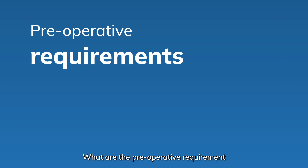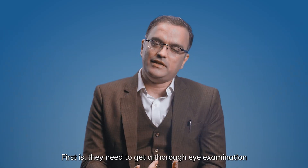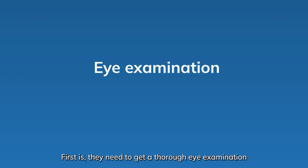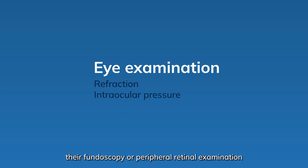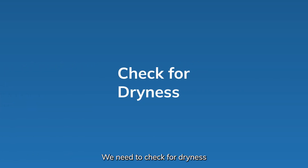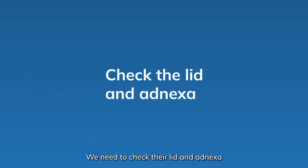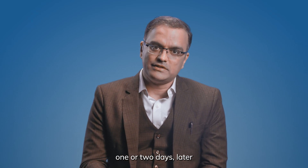What are the pre-operative requirements for a patient willing to go for LASIK? First, they need a thorough eye examination which includes refraction, their intraocular pressures, fundoscopy or peripheral retinal examination. We need to check for dryness using Schirmer's test or T-BURT test. We need to check their lids and adnexa and analyze whether they are psychologically ready for surgery, then plan the surgery one or two days later.